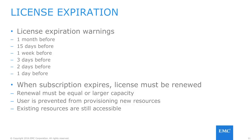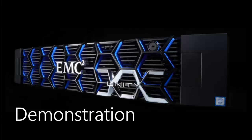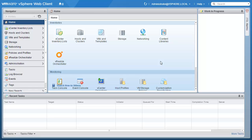Once the subscription expires, a license must be renewed in the same capacity point or larger. If a license is not renewed, users will not be able to provision new resources on their system, but will still be able to access existing resources as needed. Let's now get into a demonstration of deploying a Unity VSA instance through VMware vCenter, then taking a look at Unisphere for management. We'll be deploying our Unity VSA through vSphere Web Client.